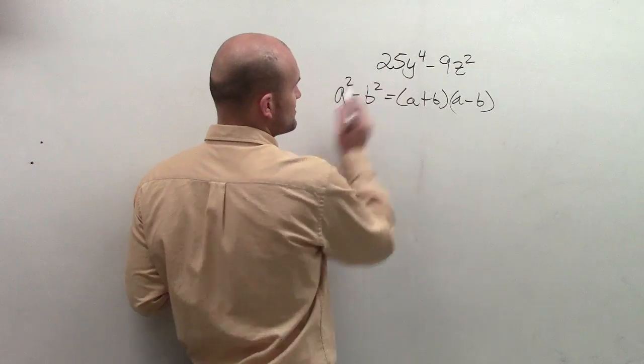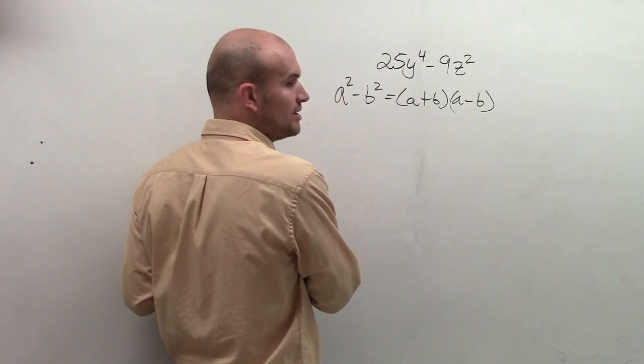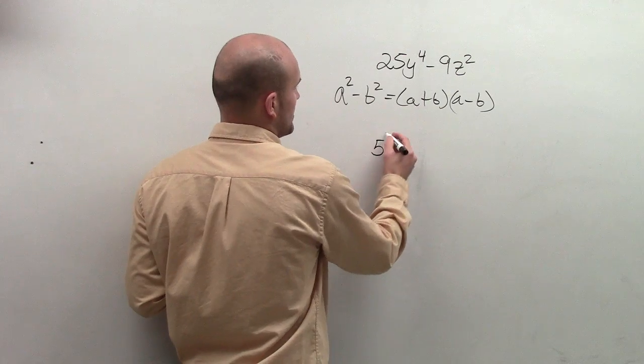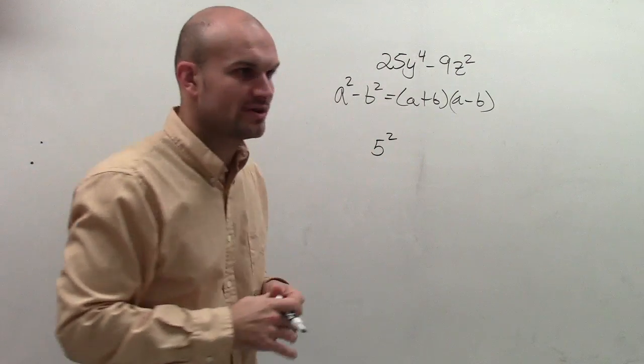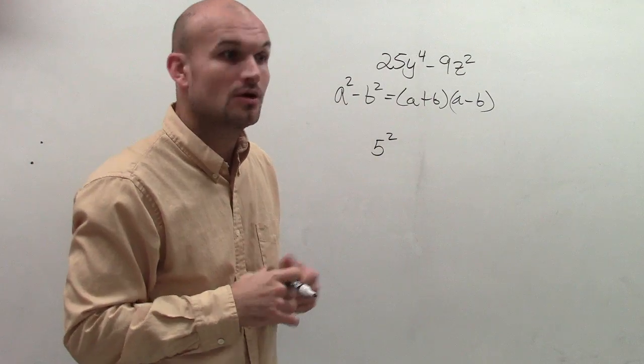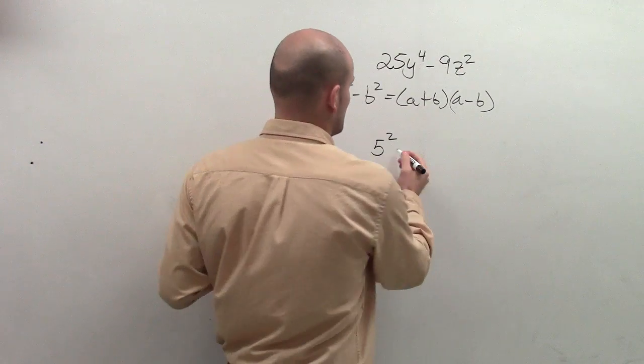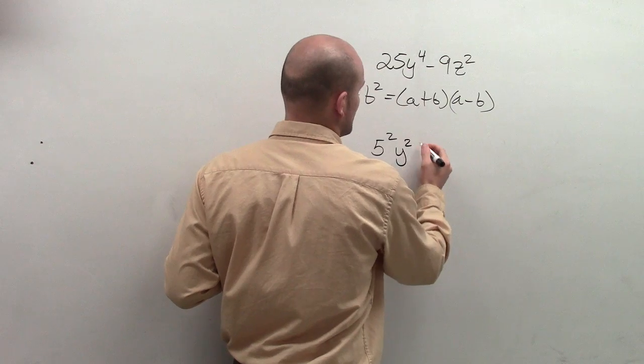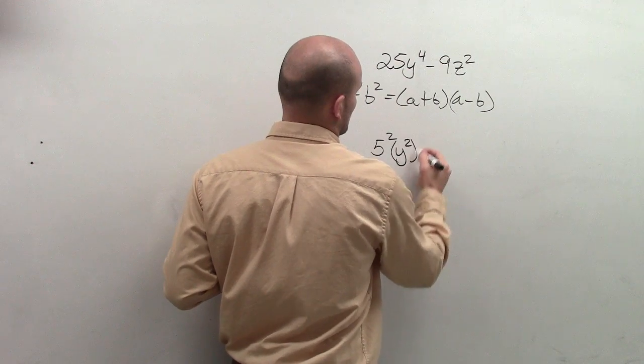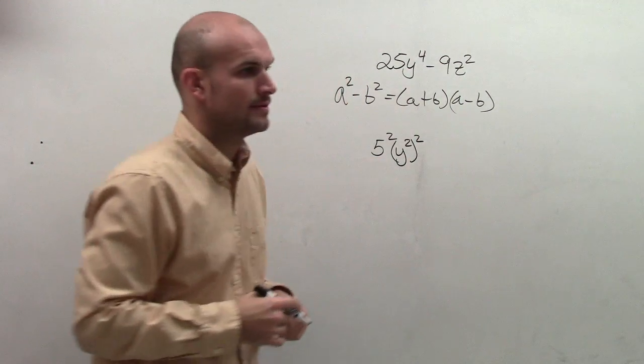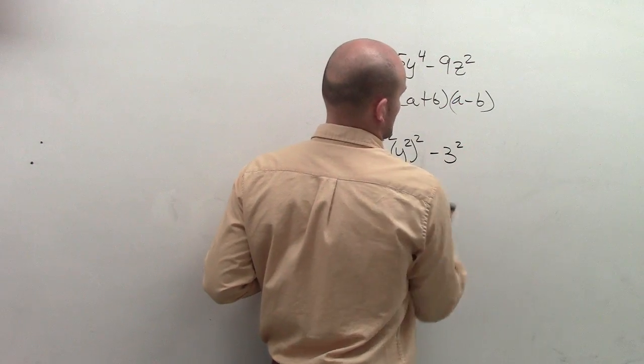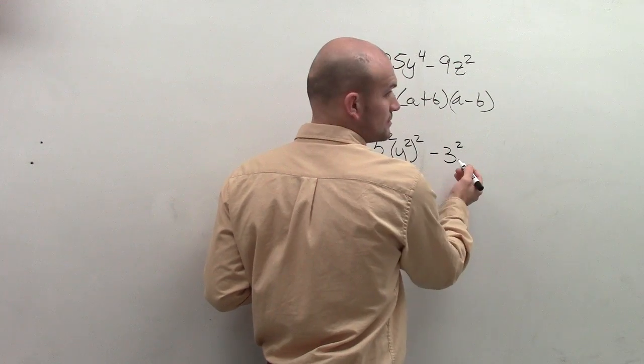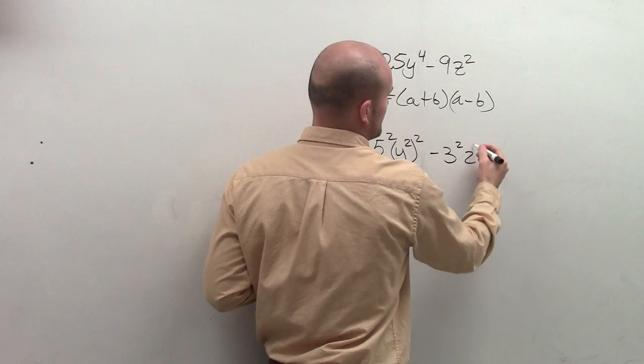So what we're going to do is if I write 25 as a squared number, that's the same thing as 5 squared. And then can I write y to the 4th as a squared number? Y squared squared. You can write that as y squared squared. And then let's look at 9, we can write that as 3 squared. And then we can write z squared as z squared.